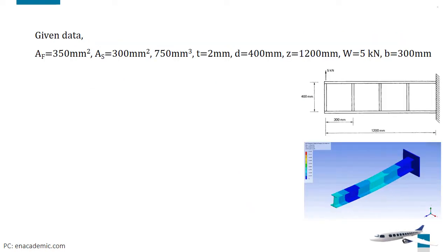Here, we consider the beam. Let's write the given data. Cross-sectional area of the flanges, A_F is equal to 350 mm², and cross-sectional area of the stiffeners, A_S is equal to 300 mm². Elastic section modulus is equal to 750 mm³. Web thickness, t is equal to 2 mm.